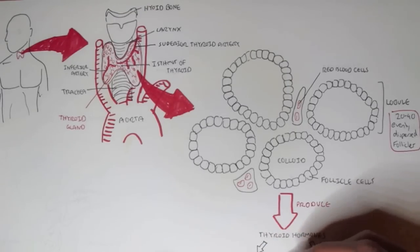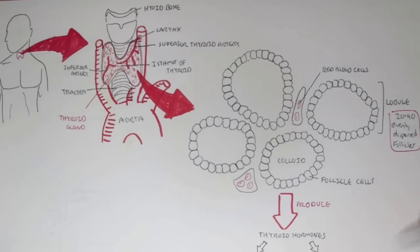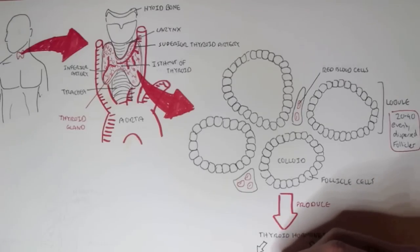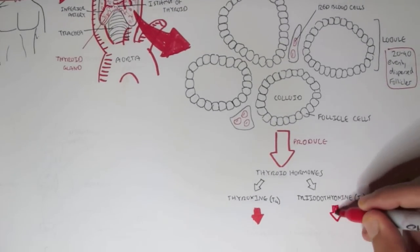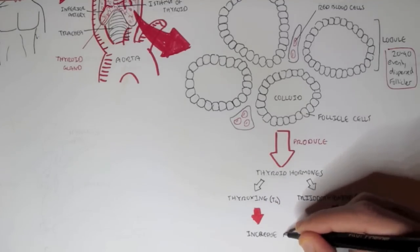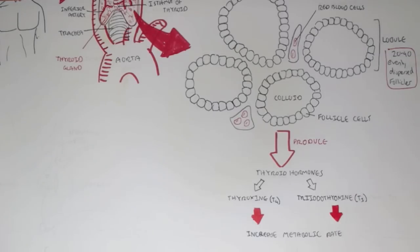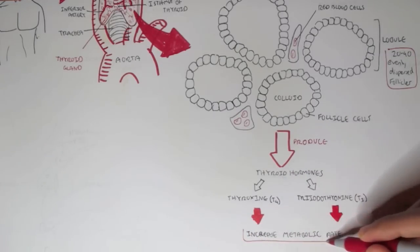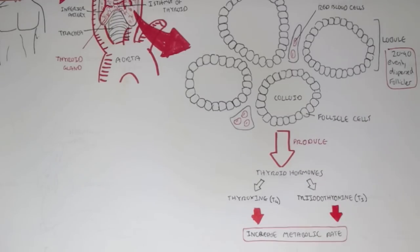There are two thyroid hormones: triiodothyronine, or T3, and thyroxine, T4. The thyroid also produces calcitonin and other hormones, but we are only looking at these two. What T3 and T4 do essentially is increase the metabolic rate, amongst many other things.